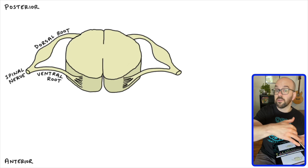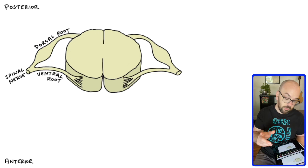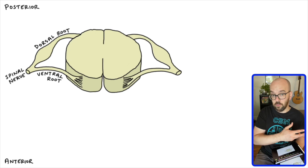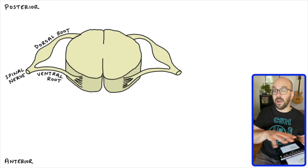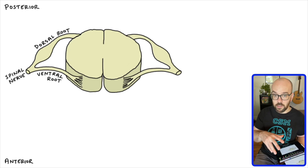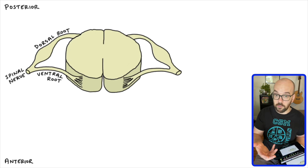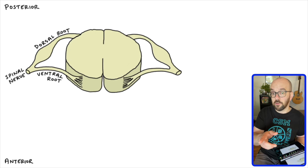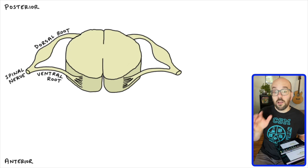Where those come together is the spinal nerve. Each spinal nerve coming into the spinal cord is going to branch off into a dorsal root and a ventral root. The dorsal root is going to be where signals come into the spinal cord. The ventral root is going to be where signals go out of the spinal cord. Just know that signals go in through the dorsal and out through the ventral root.